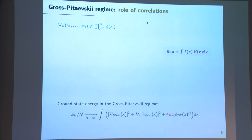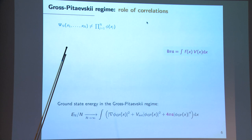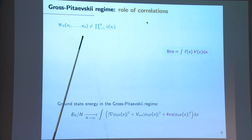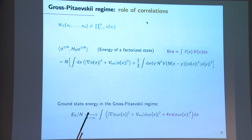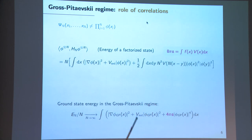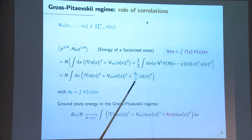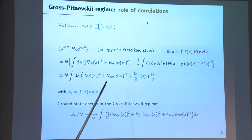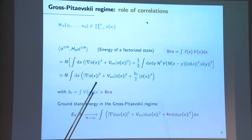The result on the ground state energy shows very clearly that even though the system exhibits condensation, the many-particle wave function is not simply a product of one-particle functions. It is easy to compute the energy of a factorized state: from the potential in the large N limit, this behaves like a delta function, giving an expression with the correct form but with a prefactor equal to the integral of the potential rather than the scattering length, which is much smaller.